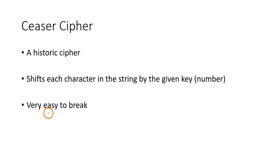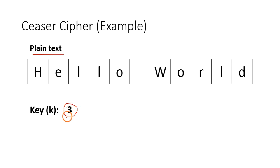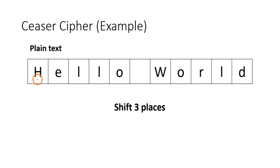Caesar cipher is very easy to break — anyone can find the plain text by doing a brute force attack, trying all possible keys. Now, taking an example: the plain text is 'hello world' and the key is 3. These two inputs — plain text and key — are given to the Caesar cipher.